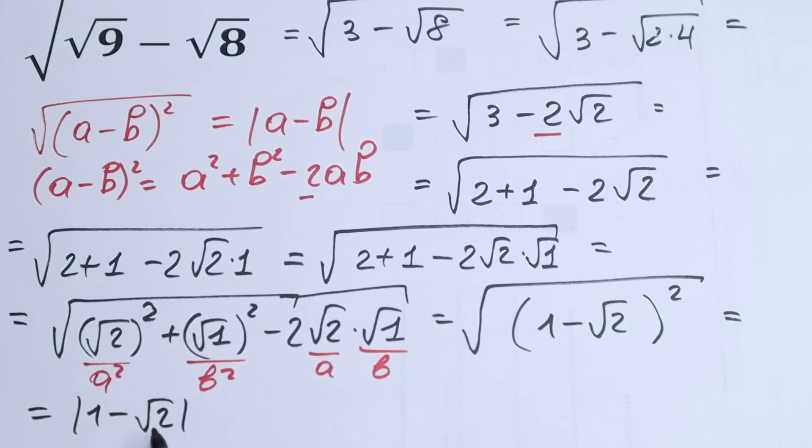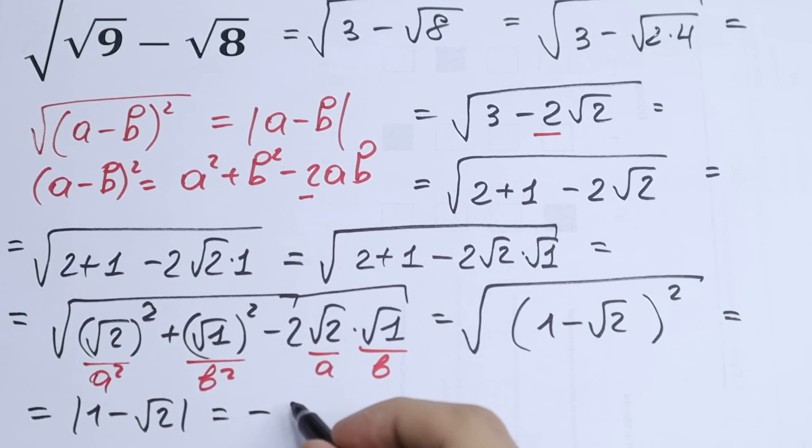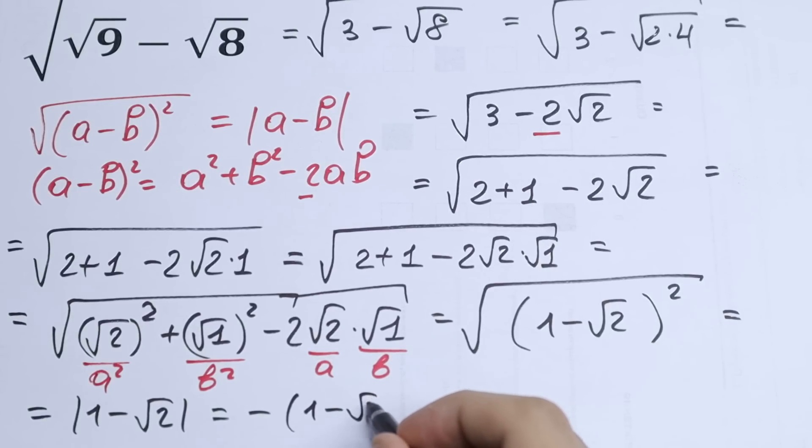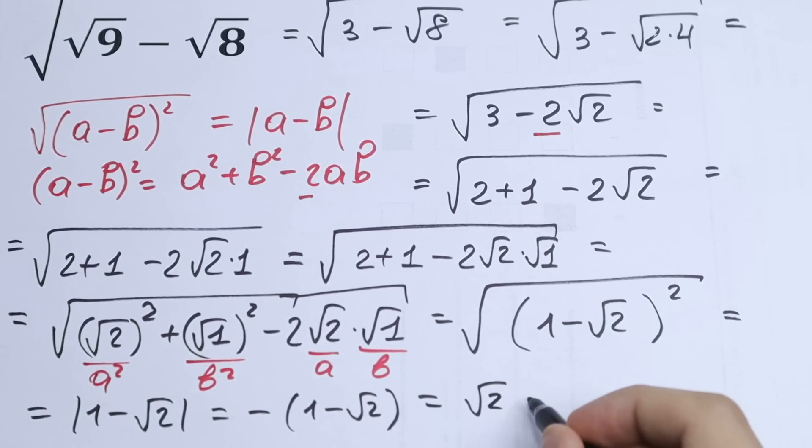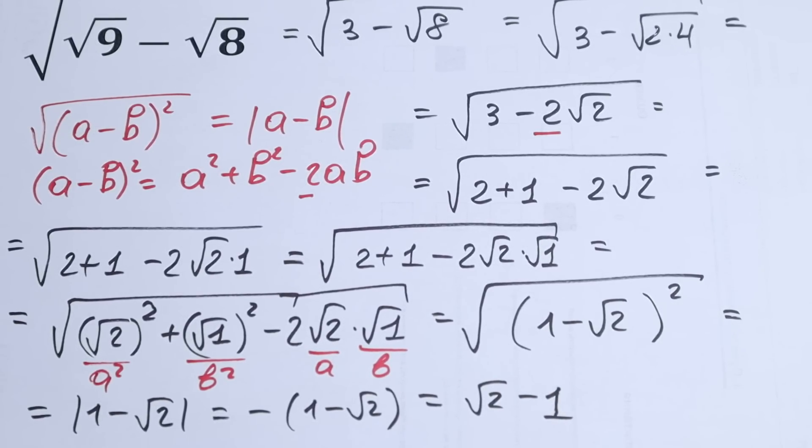We know that √2 is greater than 1, so we need to put a minus right here. So it will be equal to -(1 - √2). And the final result, √2 - 1. And this is our final answer.